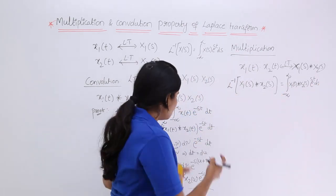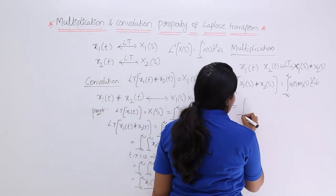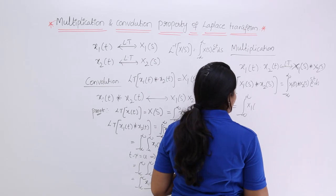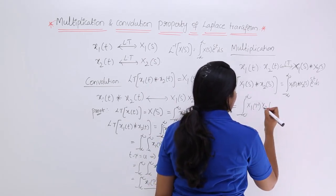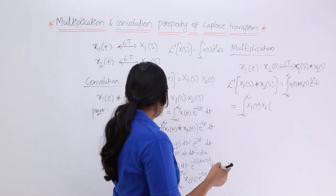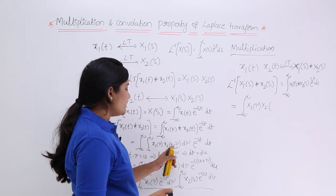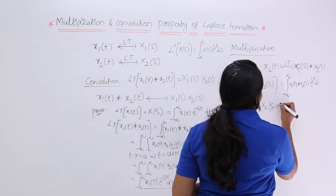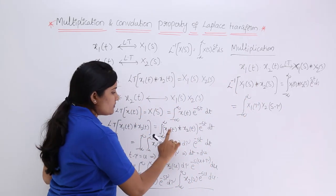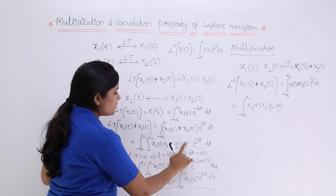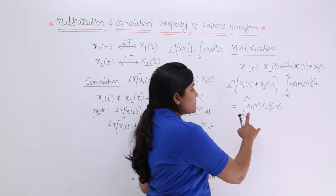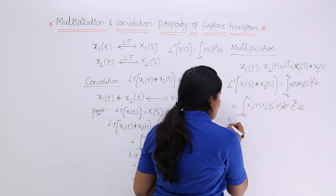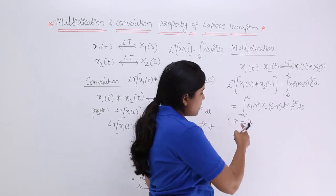We know the convolution formula, so similar to before I will process here. Expanding the convolution x1 of s convolved with x2 of s gives the integral from minus infinity to infinity of x1 of tau times x2 of s minus tau d tau. So substituting that, and keeping e to the power st ds, we have a double integral. Again I am letting s minus tau equal u, where tau is a constant, so s equals u plus tau and ds equals du.